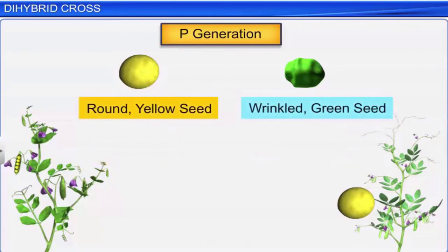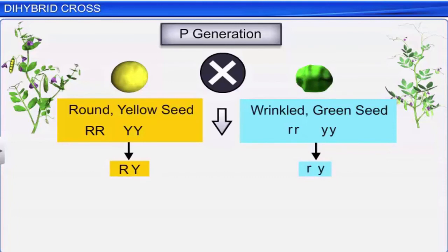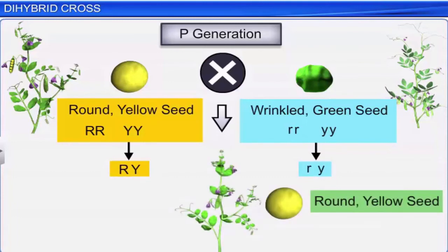The genotype of the parents can therefore be denoted as capital R capital R capital Y capital Y, and small r small r small y small y. On crossing the plants, the gametes capital R capital Y and small r small y unite to produce yellow and round seeds with genotype capital R small r capital Y small y in the F1 generation.